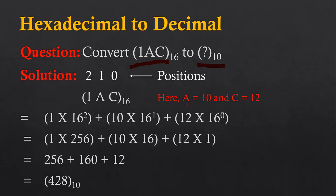A can be represented as 10 and C can be represented as 12. For calculation purposes, we cannot use A directly — we have to convert it to 10. Now, I am using each digit with its positional value.